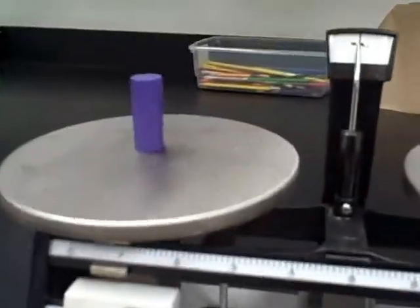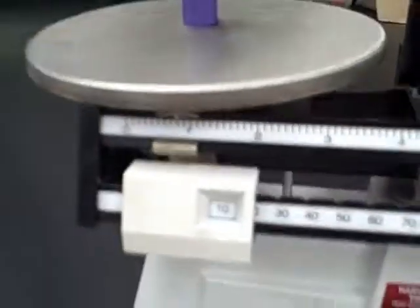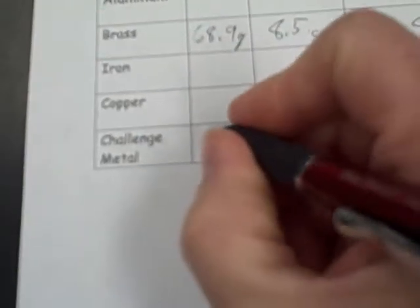So the first step is to take your object, let's say I'm doing this purple cylinder here, I get its mass, you all know how to do that, so this would be 10.8 and you record it in the mass column, 10.8 grams.